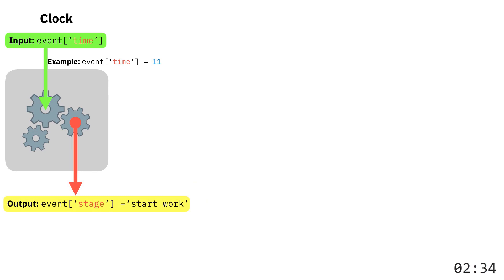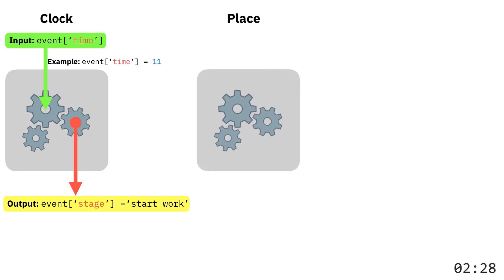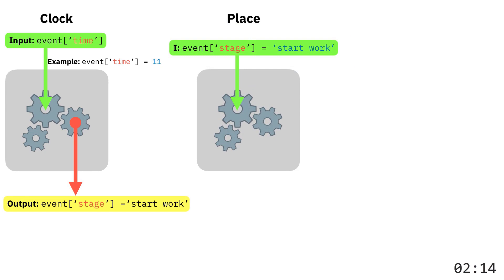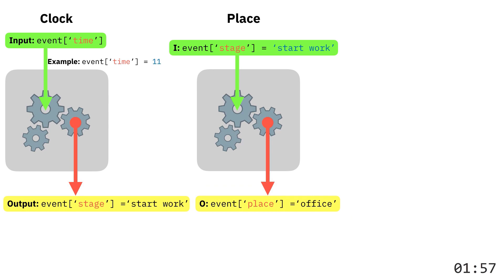Let's go to the second Lambda function. The second Lambda function is a 'place', and this is what the function looks like — the same structure as the clock. We have some input, and the input is the same as the output of the clock Lambda function: stage equal to 'start work'. We put this value into the Lambda function, triggering it. The place Lambda function then prepares an output — and the output is a place, which is the office. That means that when we start working at 11 o'clock, the place is the office.